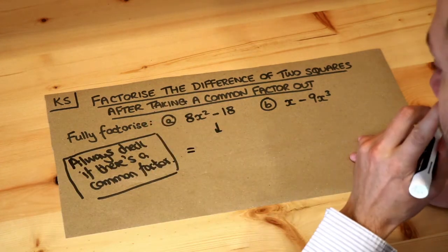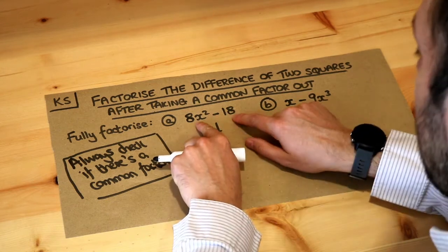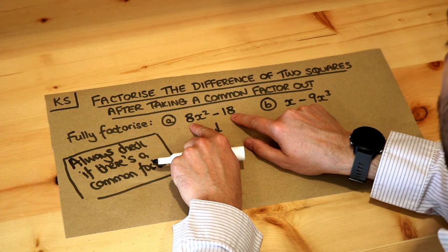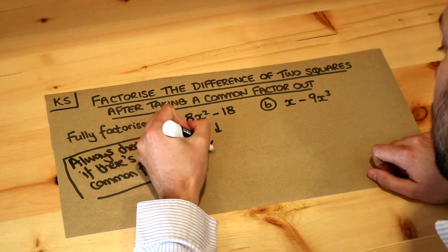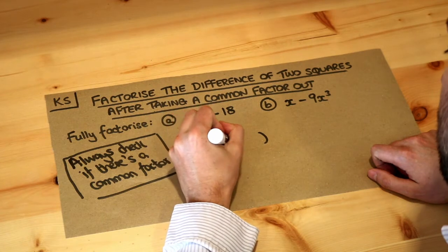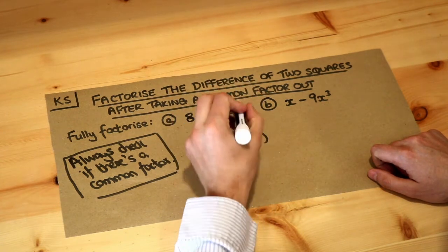With this one, let's check if there's a common factor. 8x² and -18. Well, 8 and 18 have a common factor of 2, so we're going to factorise the 2 out. 2 times what is 8x²? Which is 4x². 2 times what is -18? Which is -9.